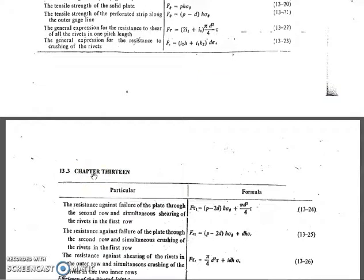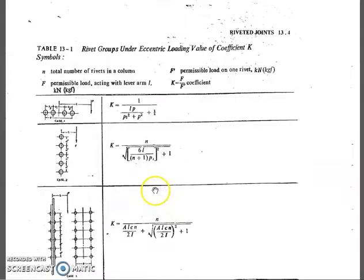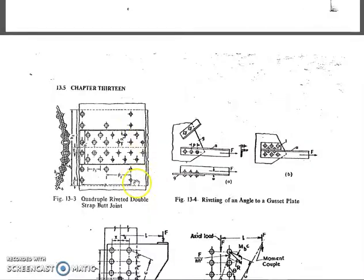These are the important design procedure steps and usage of the design data handbook with respect to the longitudinal joint for riveted joints. After the strength calculations, we determine the efficiency of the joint, which is the minimum strength of the joint divided by the strength of the solid plate.